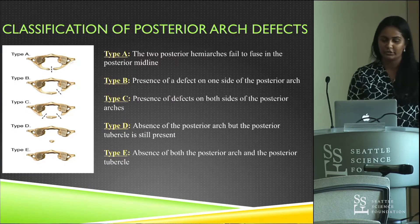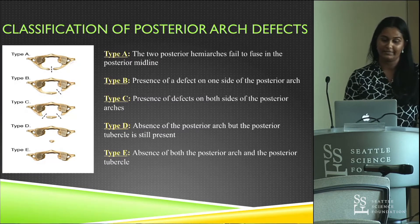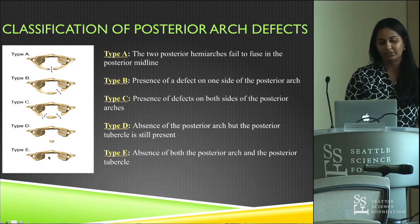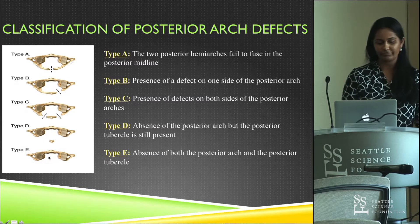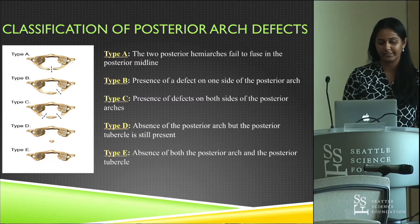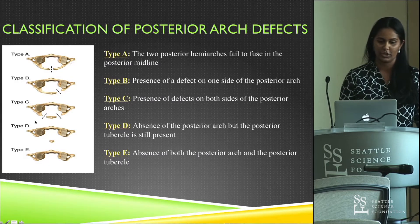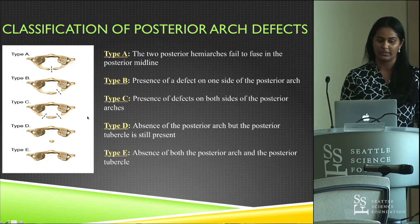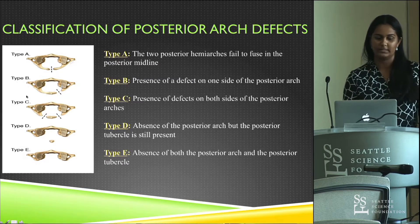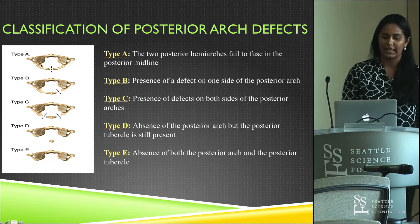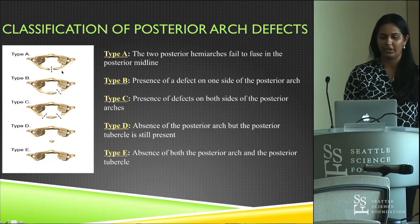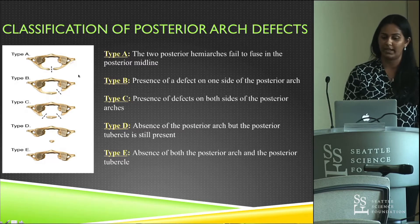There are two types of anomalies that can develop from posterior arch defects: median clefts or varying degrees of aplasia of the posterior arch. A classification system commonly used in the literature subdivides these into five types. Type A is the most common — the hemi-arches did not fuse at the midline — occurring in about 97% of cases. Type B has a cleft on one side of the posterior arch.